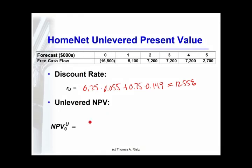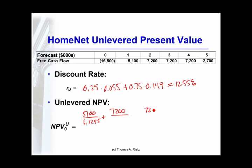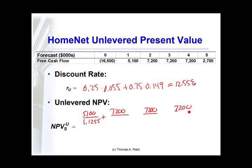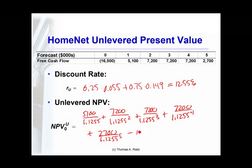The unlevered net present value of the project is the value of each one of the cash flows discounted at the unlevered cost of borrowing of 12.55%: $5,100 discounted once, $7,200 discounted twice, then three times, then four times, and $2,700 discounted five times, minus the initial cost, equals $4,747.